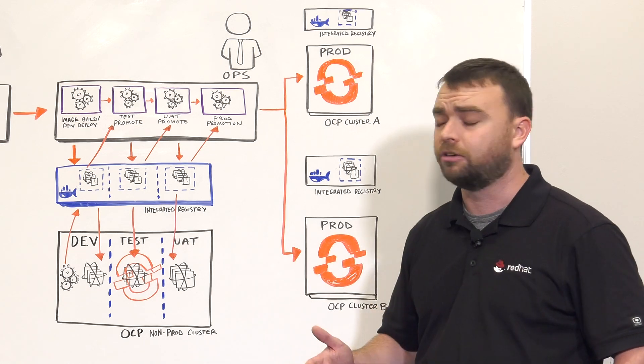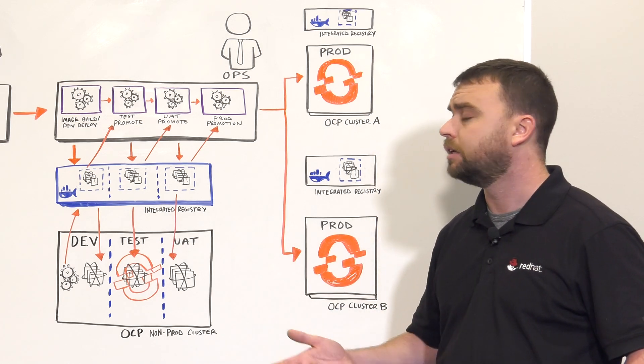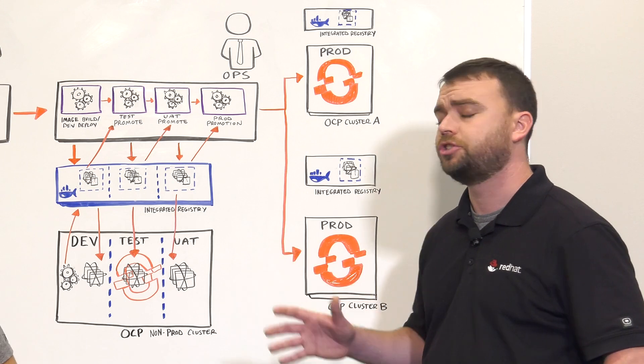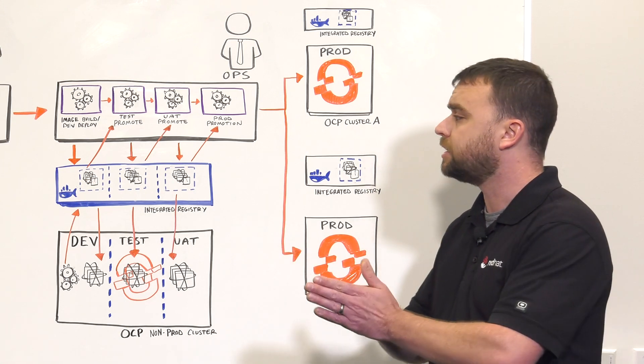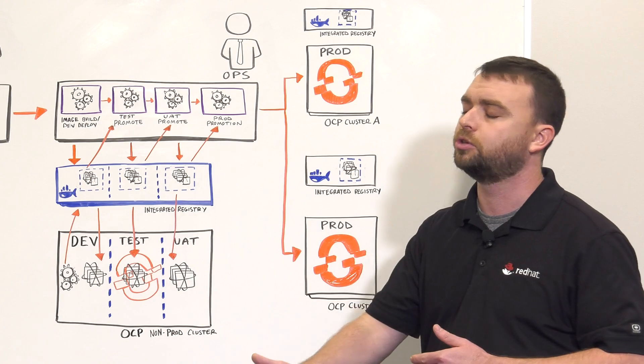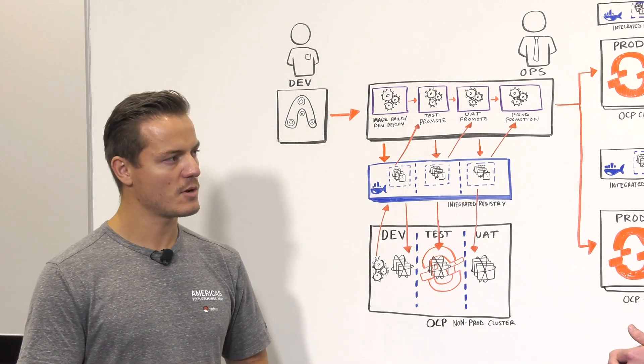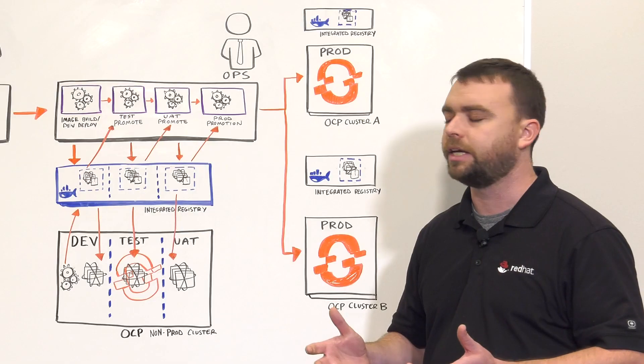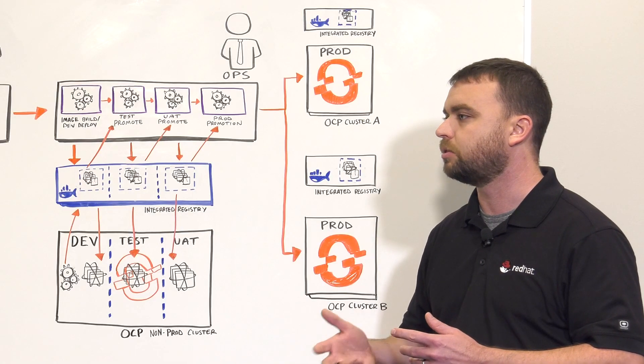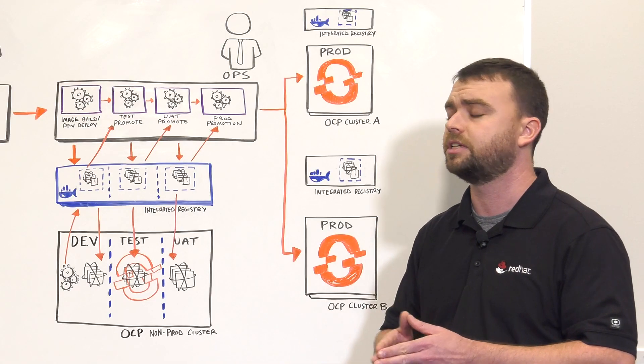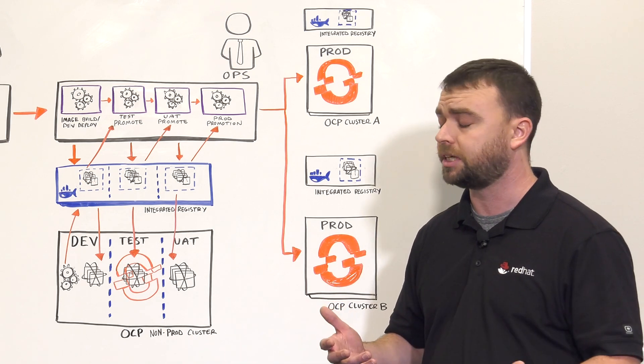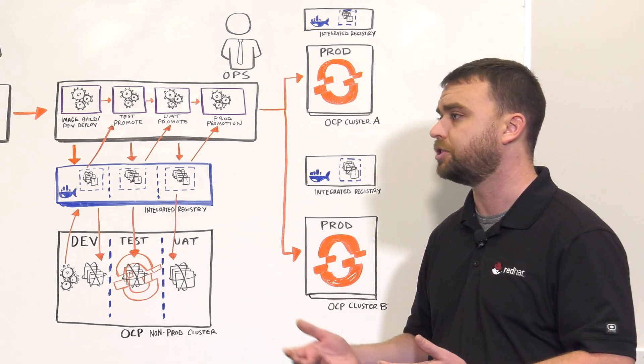So if you already have a registry, such as Quay, then this process is changed a little bit. We still use the same tagging, but we may not need to necessarily push that image to multiple registries. So for us that don't know, can you tell us a little bit more about Quay? So Quay is a central repository for our images, but it also offers additional features such as geo-replication, high availability, and some security and automation.